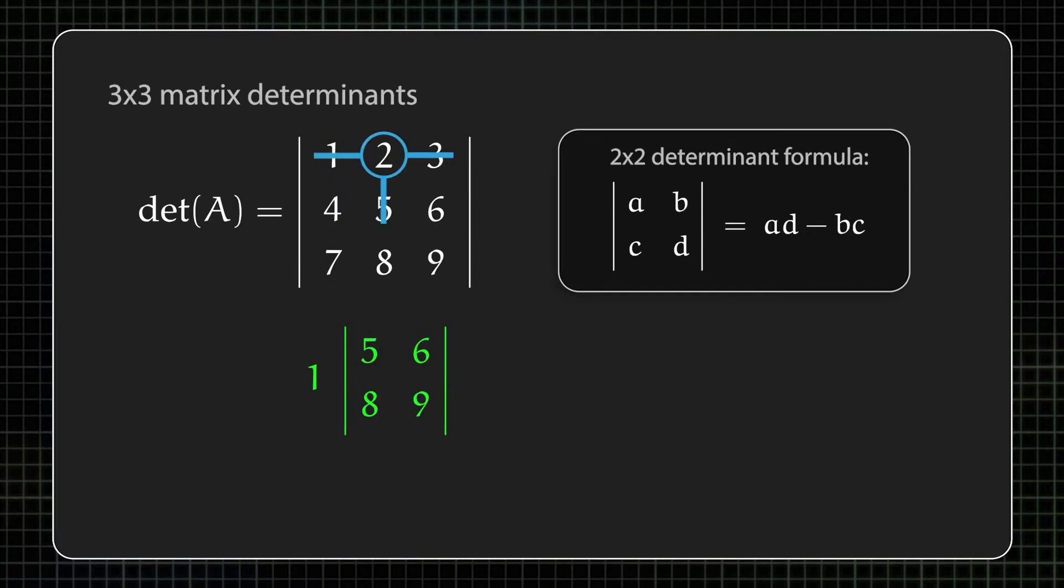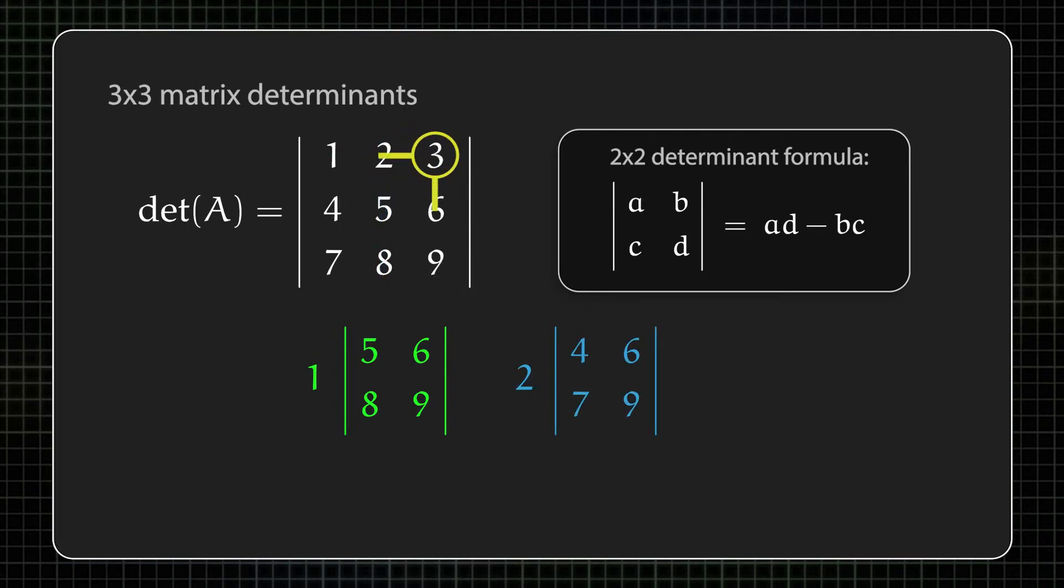Doing this for each number in the top row gives us three terms, and we combine them by adding the first and third and subtracting the second.